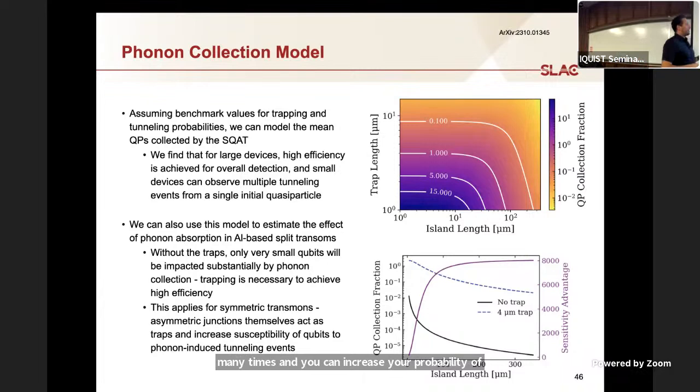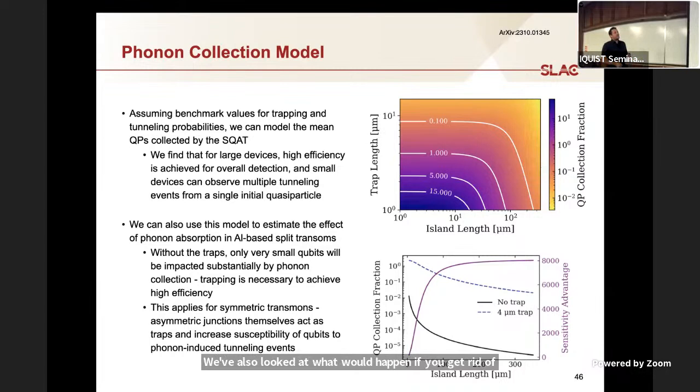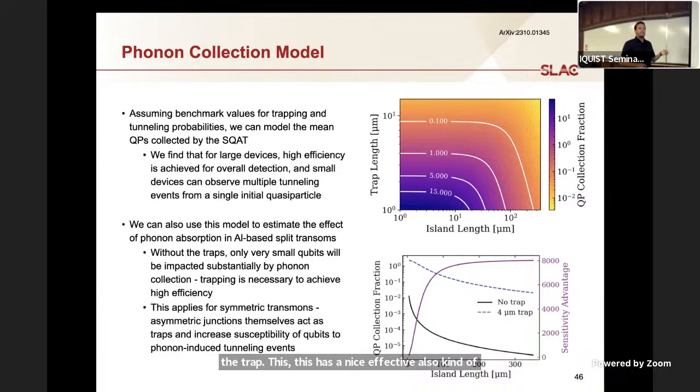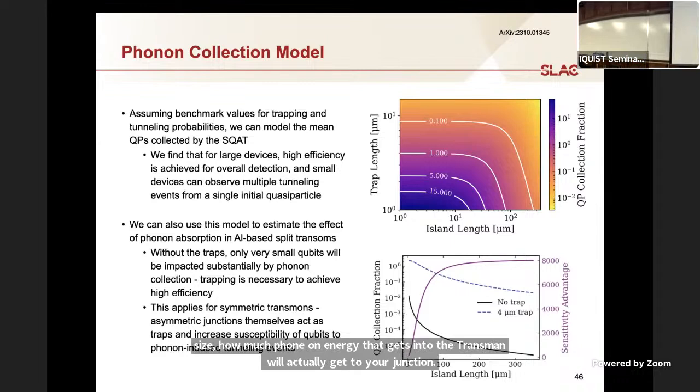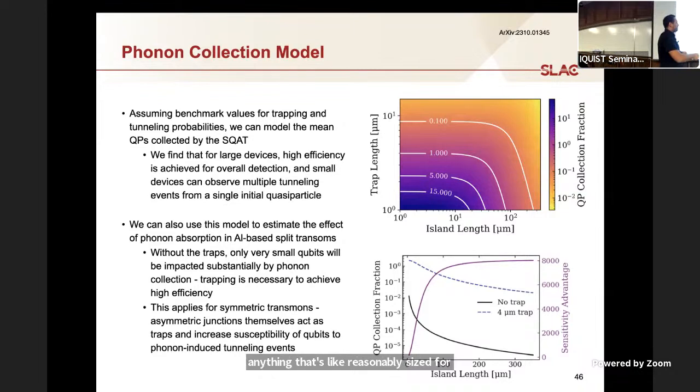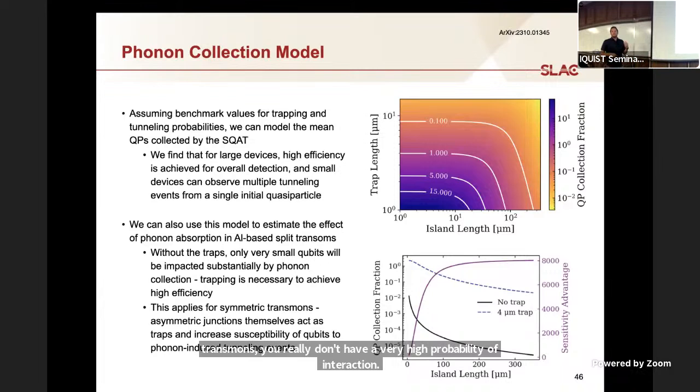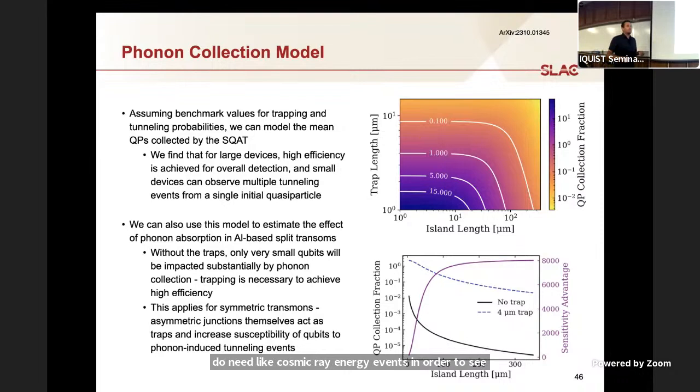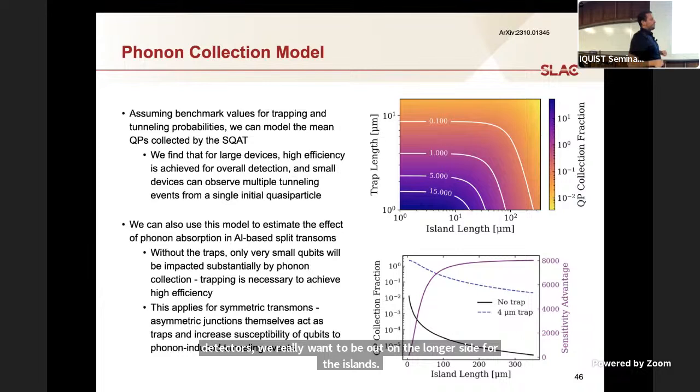The hope is you make quasi particle lifetimes long enough and the junction volume small enough that you can see the same quasi particle many times, and you can increase your probability of detecting it and the number of times you detect it. We've also looked at what would happen if you get rid of the trap. This has a nice effect of also being an estimation of if you make a transmon of a certain size, how much phonon energy that gets into the transmon will actually get to your junction. You find that if you don't have this trap for anything that's reasonably sized for gigahertz transmons, you really don't have a very high probability of interaction. It's something like 10 to the minus four. You really do need cosmic ray energy events in order to see significant degradation.